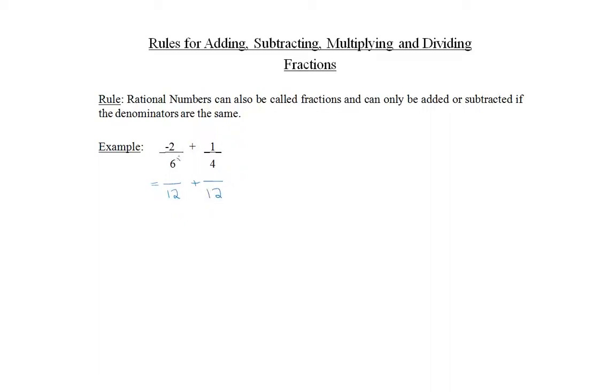6 times 2 is 12. Negative 2 times 2 is negative 4. 4 times 3 is 12. 1 times 3 is 3. Whatever you multiply the denominator by, you must multiply the numerator by as well.